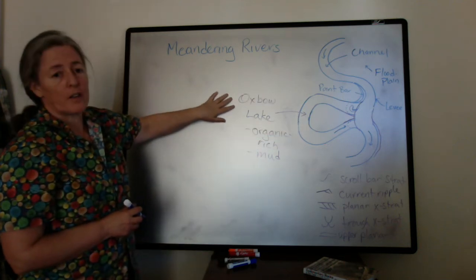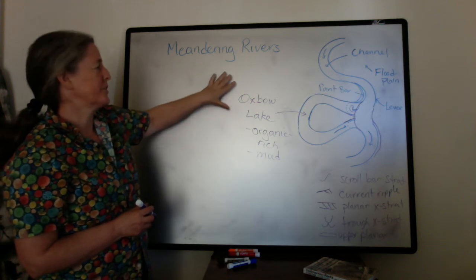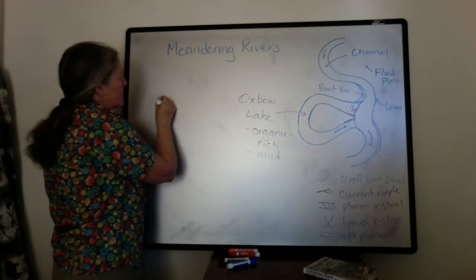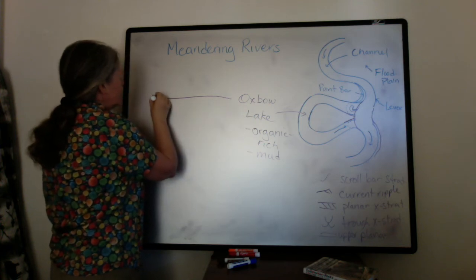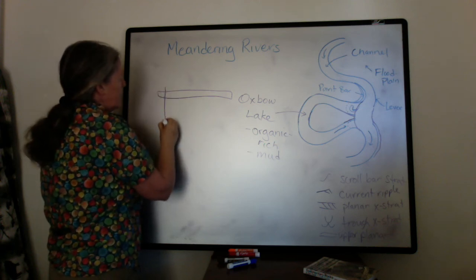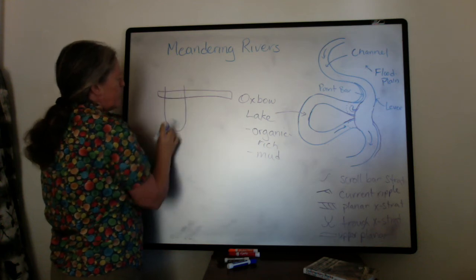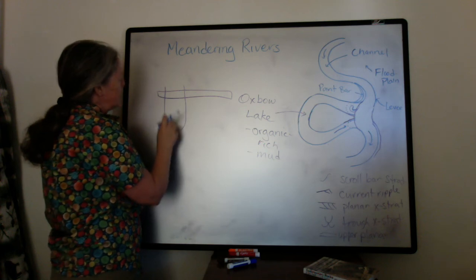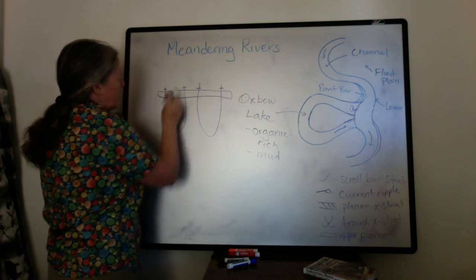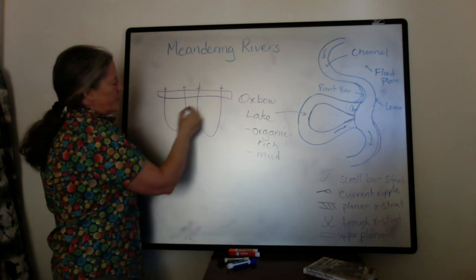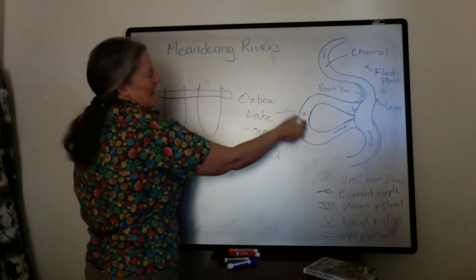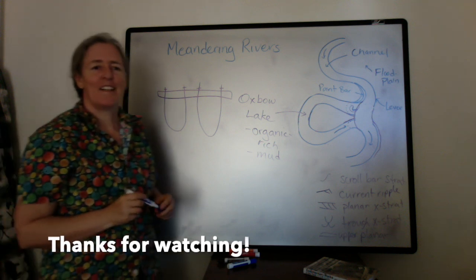These lakes are called oxbow lakes, and that's connected to the agricultural use of floodplains before mechanized tractors. Oxen were hitched to plows with a piece of wood that had holes in it — a thick beam — and softer saplings that could be bent were put through these beams under the oxen's neck. The similarity of the shape of these bows used to hitch the oxen to the plows and the bends in the river led to the name, Oxbow Lake.